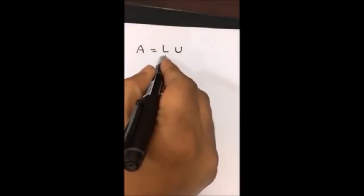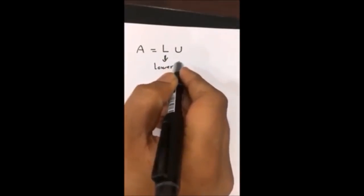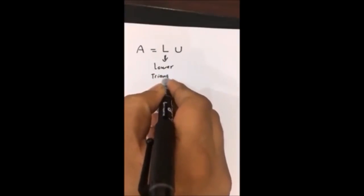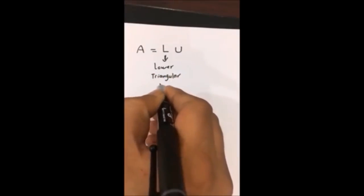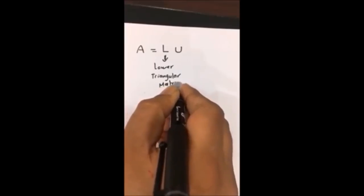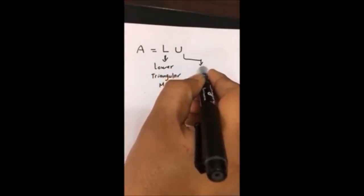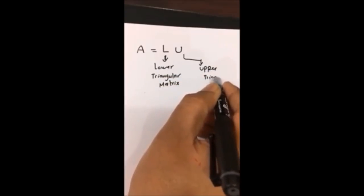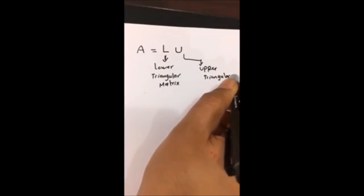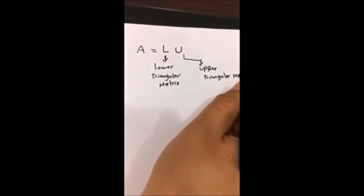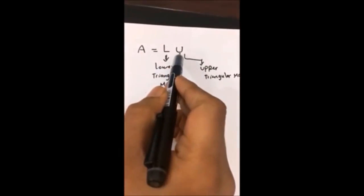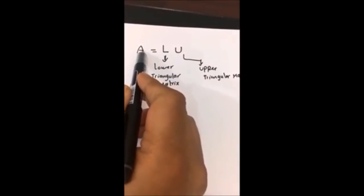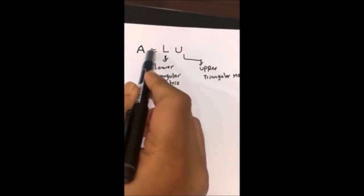الـ L هنسميها Lower Matrix أو Lower Triangular Matrix، والـ U هنسميها Upper Triangular Matrix. طيب كيف نحصل على الـ U وكيف نحصل على الـ L؟ نتفق أن أي مصفوفة عندنا يمكن تحليلها بهذه الطريقة.